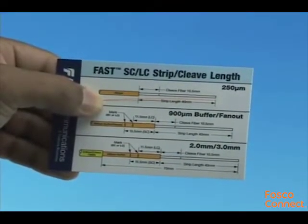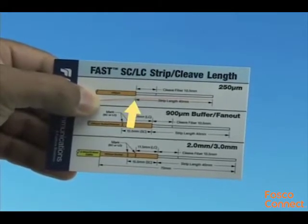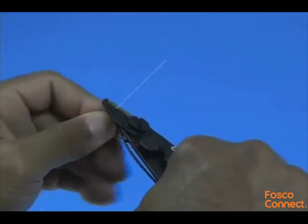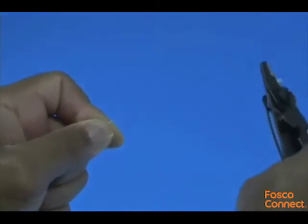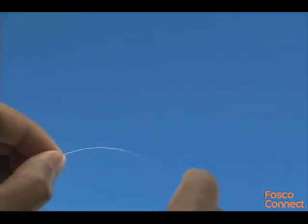Refer to the strip template and mark the 250 micron fiber at 40 millimeters from the end of the fiber. Strip 40 millimeters of coating from the fiber. Check the fiber integrity by bending the stripped end slightly at 60 degrees.